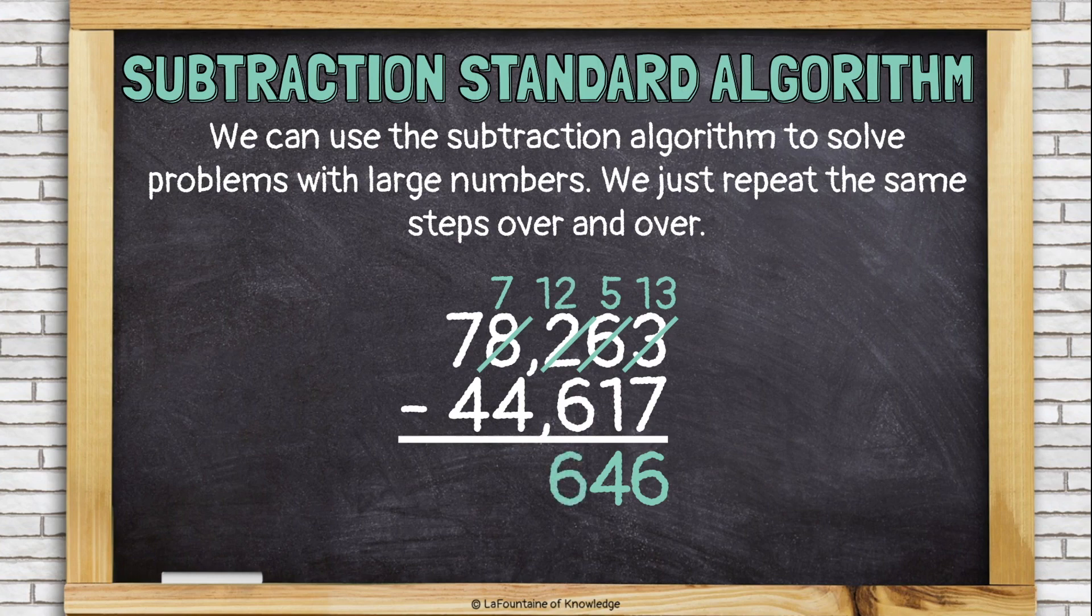Let's subtract the thousands place. Seven minus four is three. And, the ten thousands place. Seven minus four is three. So, our answer is 33,646.